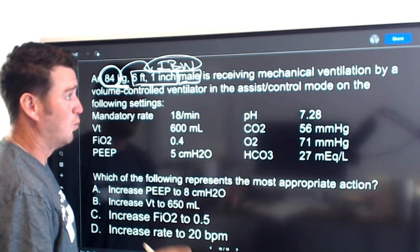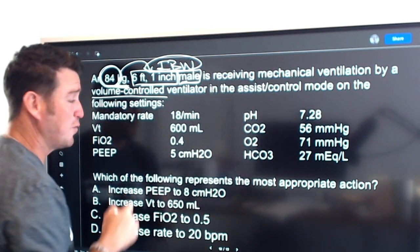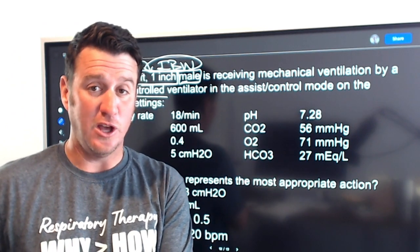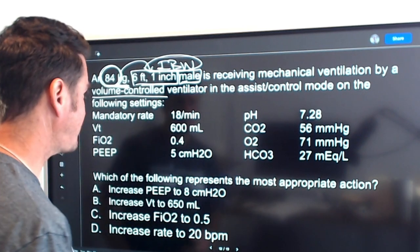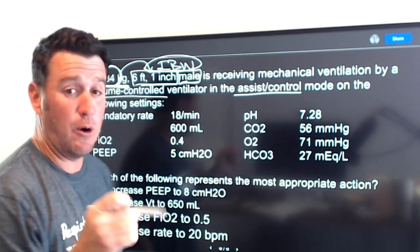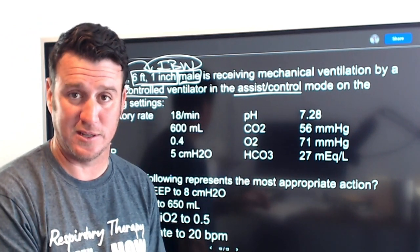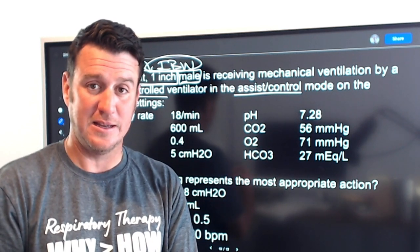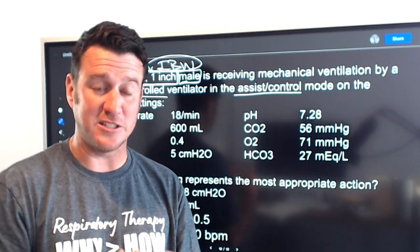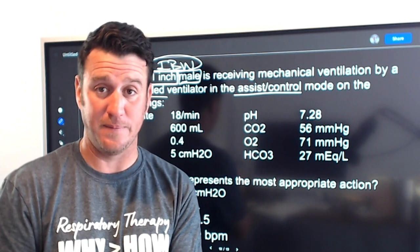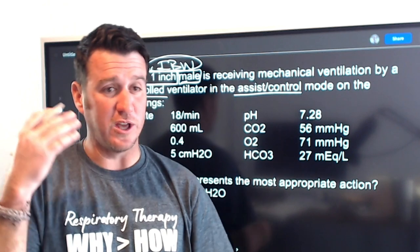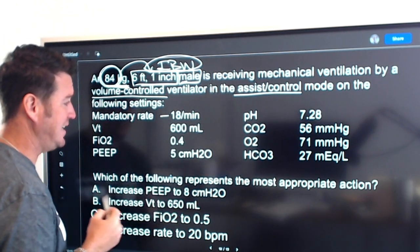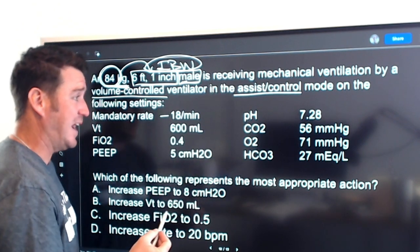The patient is receiving mechanical ventilation by a volume-controlled ventilator, meaning we are controlling tidal volume and pressures will vary. We are in assist control mode, which means there are no spontaneous breaths above the set rate — we're in VC-AC. The mandatory rate is 18, tidal volume 600, FiO2 40%, PEEP 5.